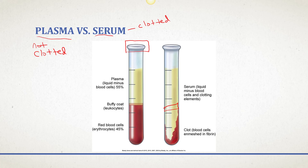Serum is often used for simple chemistry tests such as liver panels, metabolic tests, and antibody evaluations. If they want to look for the presence of certain antibodies — for example, if you've been exposed to certain diseases — most of those tests are done using serum.